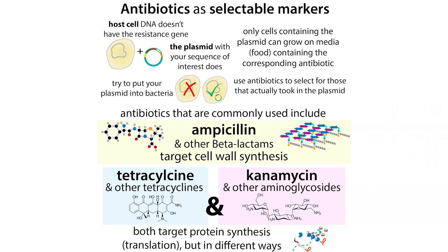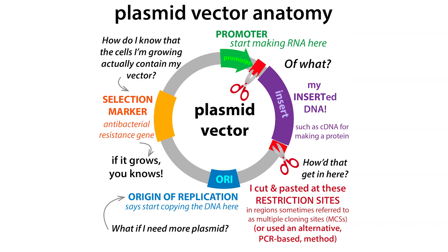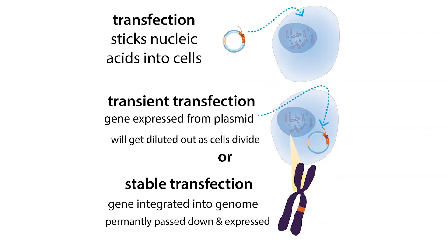With bacterial growth, we include antibiotics whenever we put in a plasmid to ensure only bacteria that take in the plasmid grow. In bacteria, that plasmid gets replicated and passed on. In the case of a mammalian cell, if you just put a plasmid in the cell, it's not going to get replicated or passed on — instead, it's just going to get diluted out.